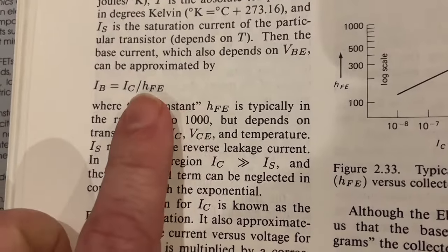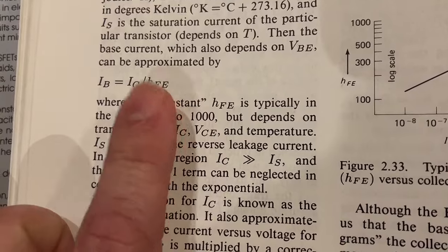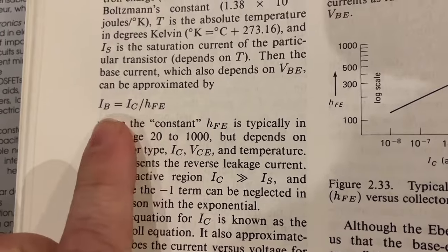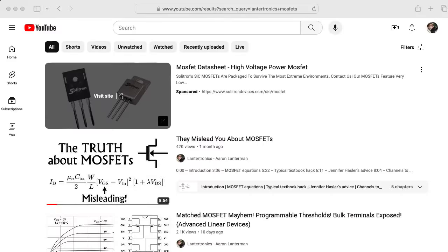So this beta here, this HFE, this is a slippery parameter. And this is a slippery relationship. Okay. So why am I banging on about this?